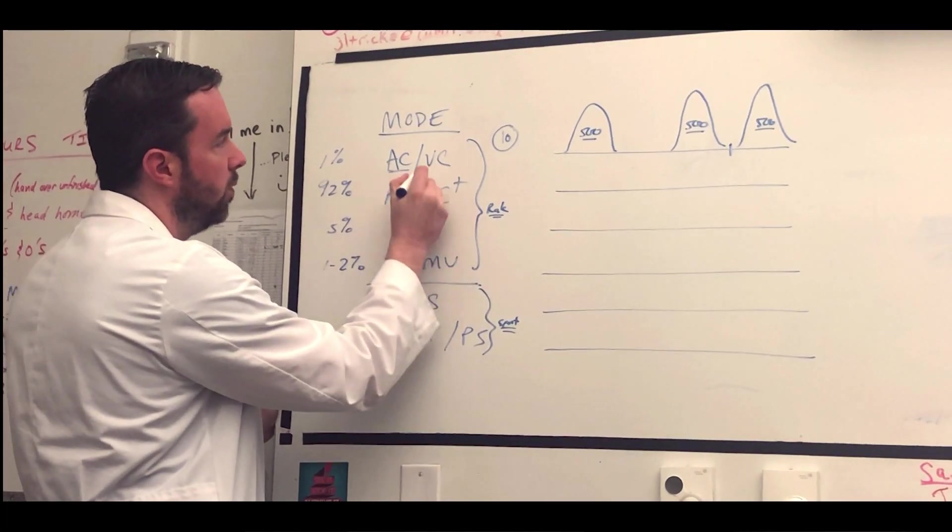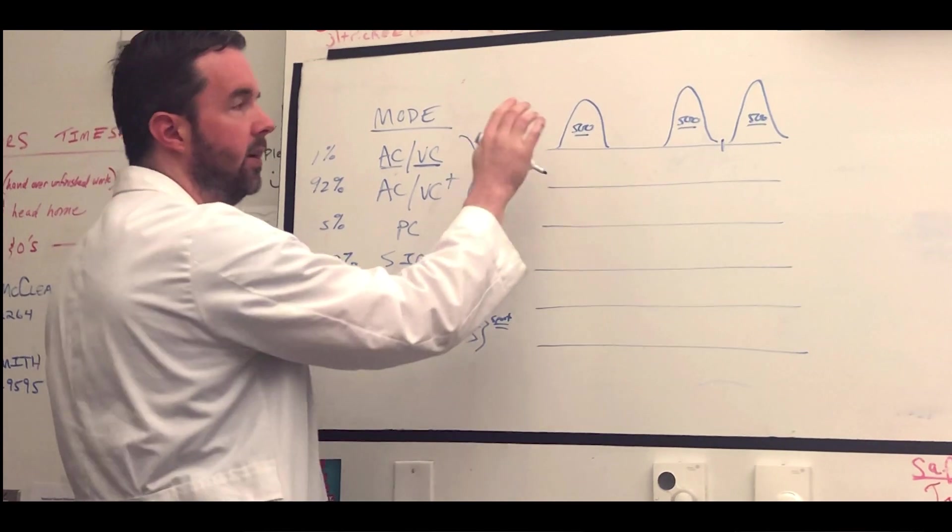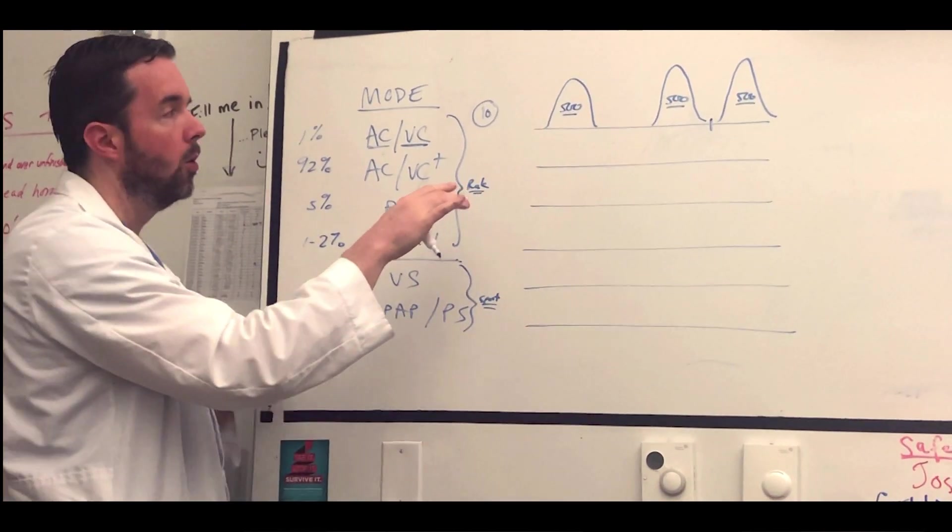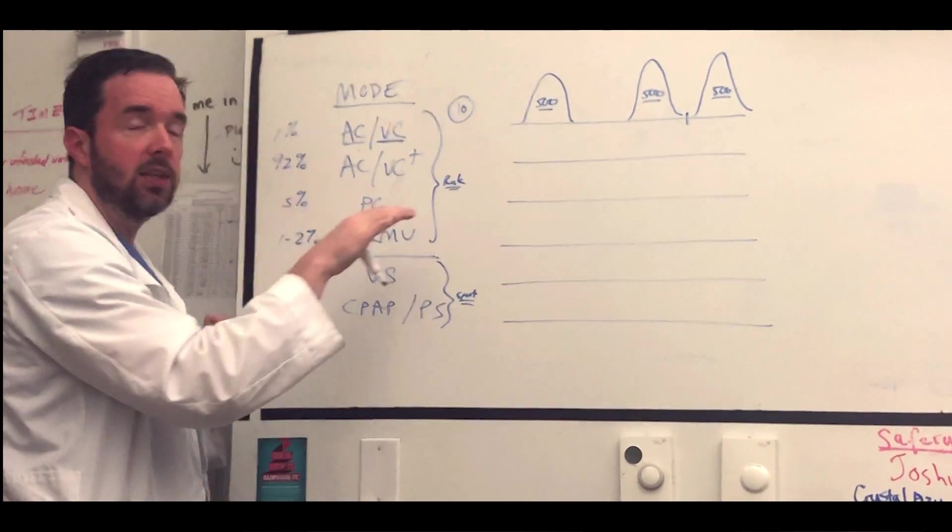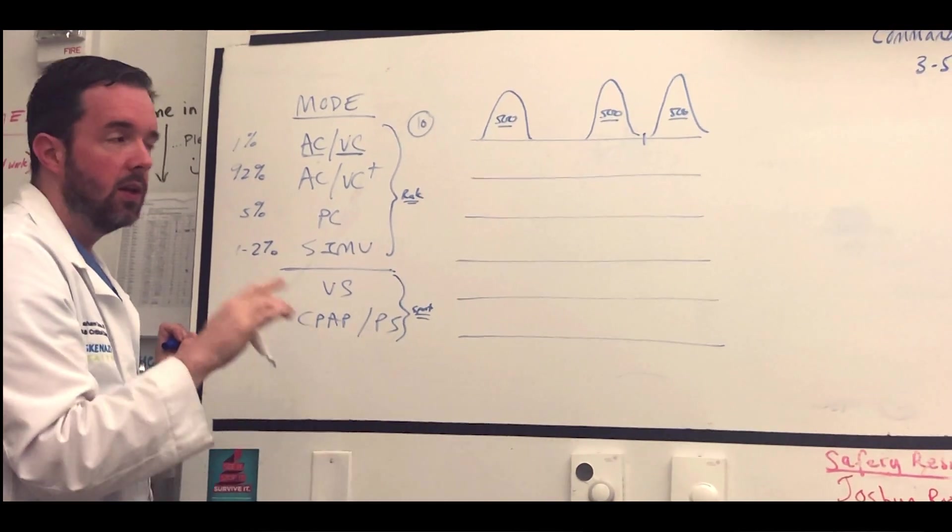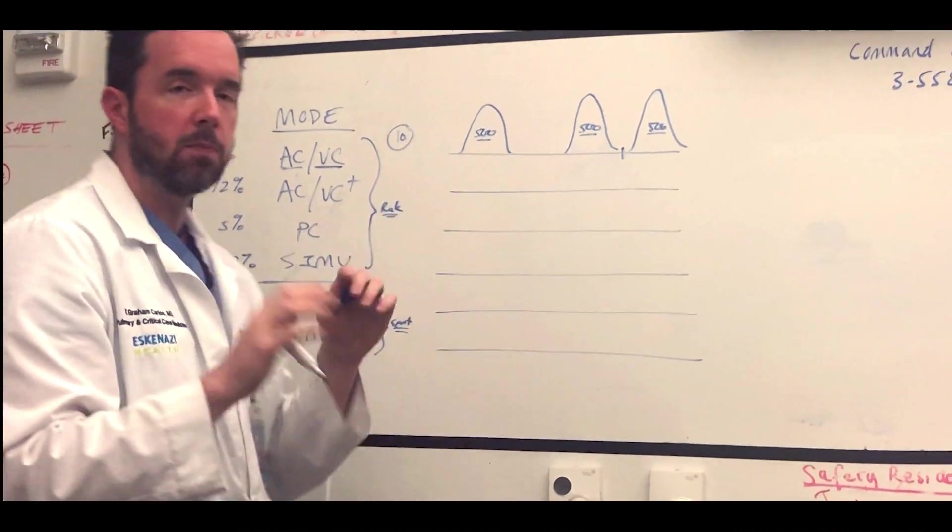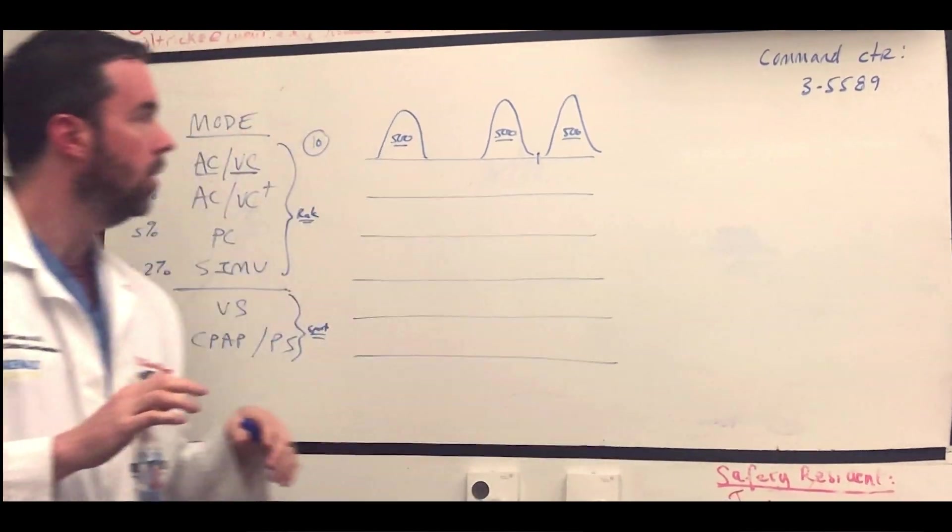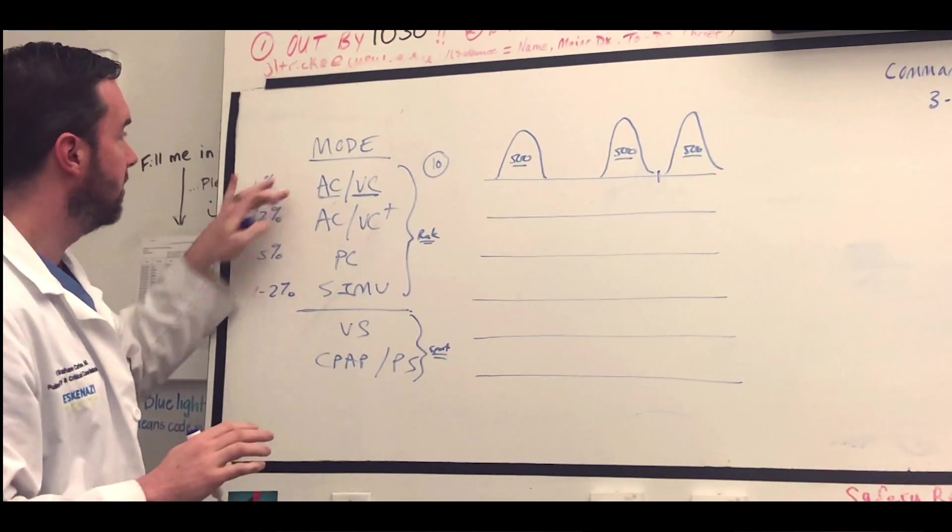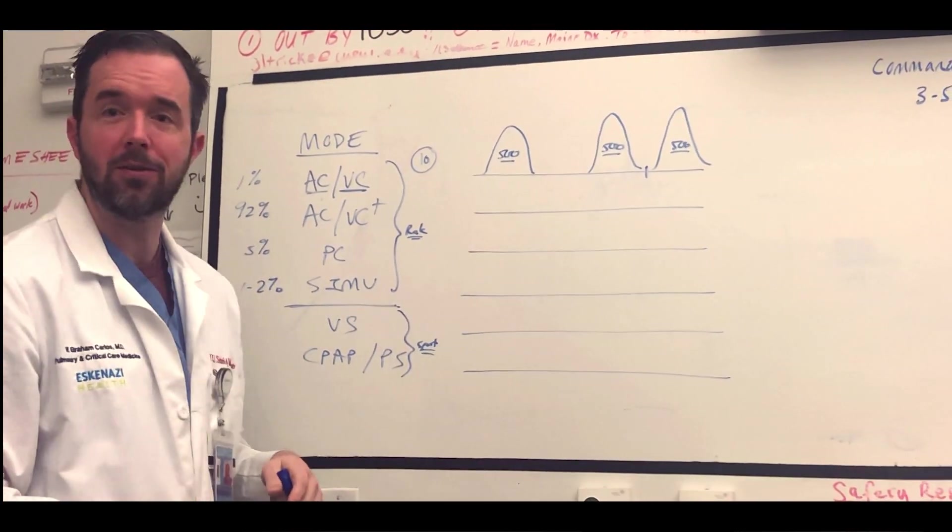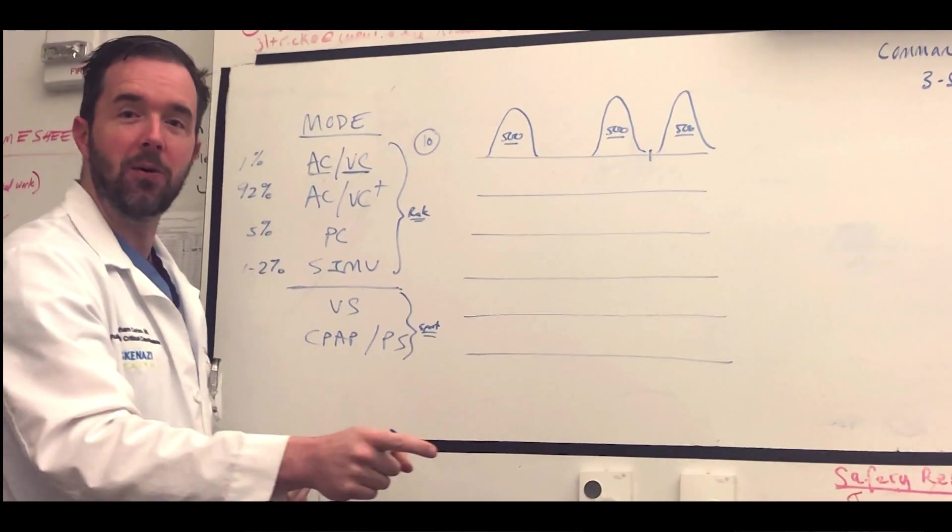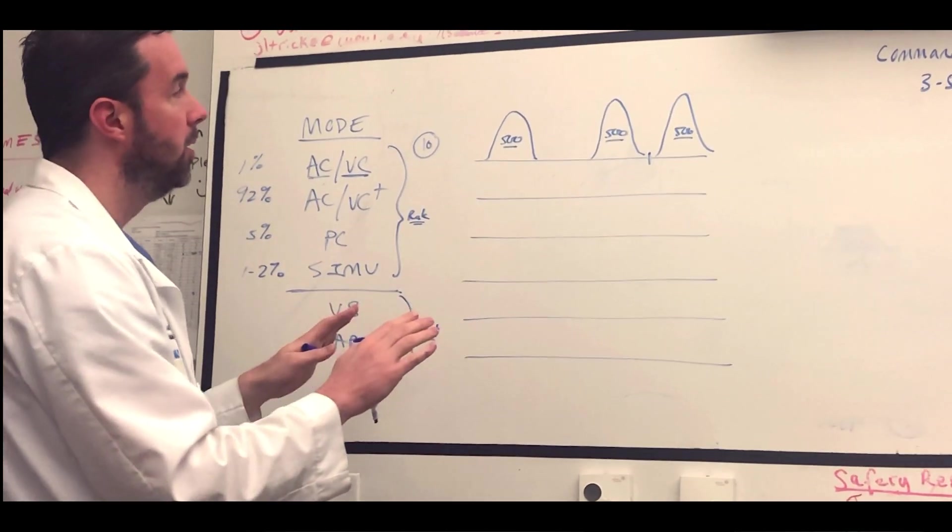In ACVC, assist control volume control, we're controlling the volume. We're not as in control of the pressure. That means in this mode it's particularly important that you pay attention to your pressures because the ventilator is saying, hey Dr. Carlos, that he wants 500, guess what, 500 is going in.